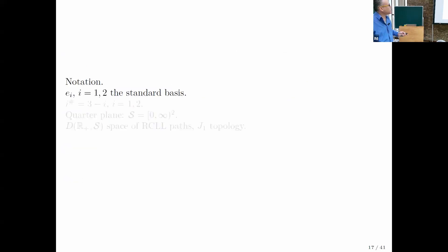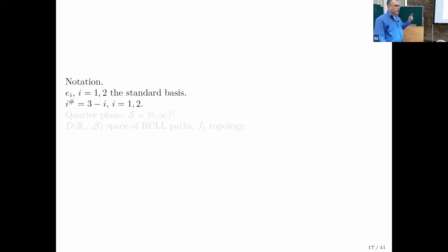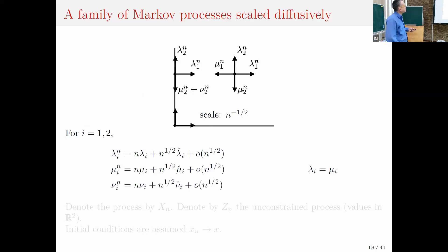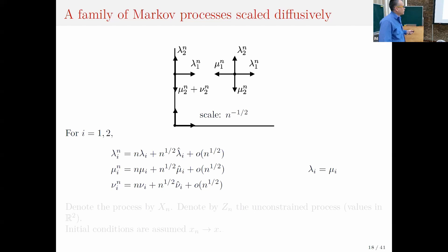Let me describe the setting. E_i are the standard basis vectors. I-dash is 3 minus i — so if i points to one face, i-dash is the other. The quarter plane is script S, and D is the space of RCLL paths with the J1 topology. Here is the family of Markov processes we're going to study, with different behavior in the interior, on the boundaries, and at the origin.